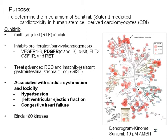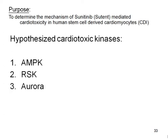The adverse cardiac events have been associated with the promiscuity of sunitinib. It binds over 180 kinases, as you can see in the AMBIT profile here to the right of the dendogram. This is a 10 micromolar AMBIT profile. I wanted to take a look at a number of kinases which have been predicted in the literature, such as AMPK and RSK by Tom Forse's group, and then looking at the AMBIT profile, I looked at a number of additional kinases.